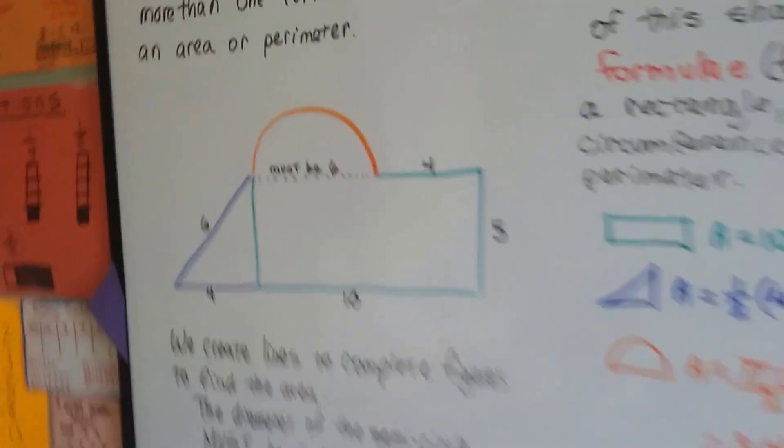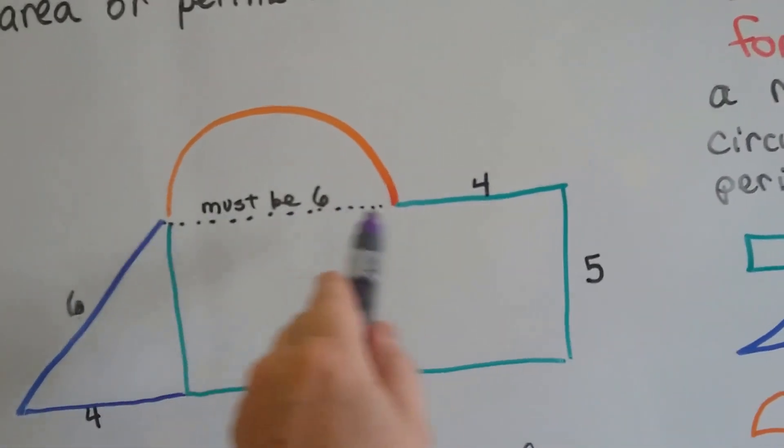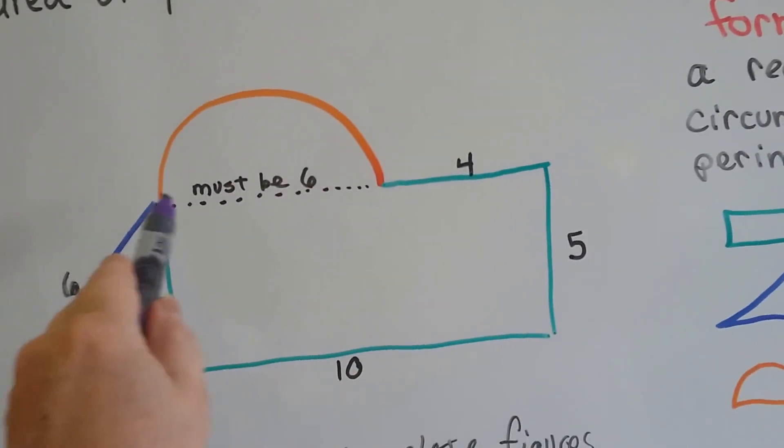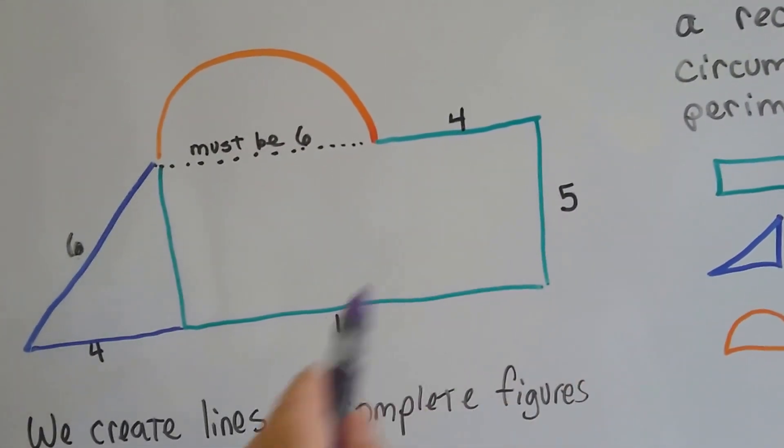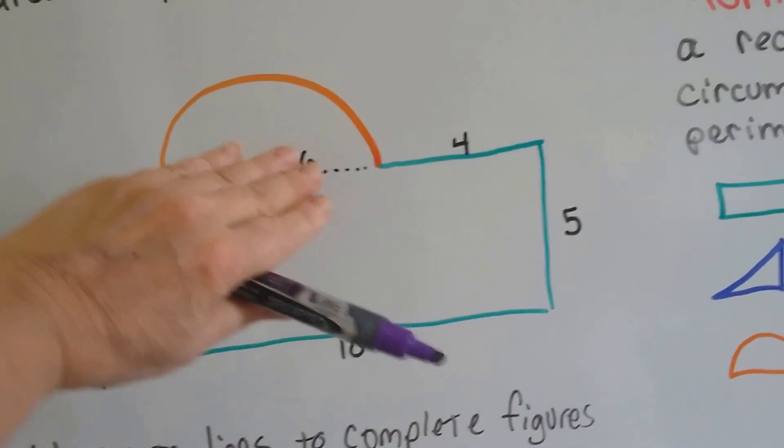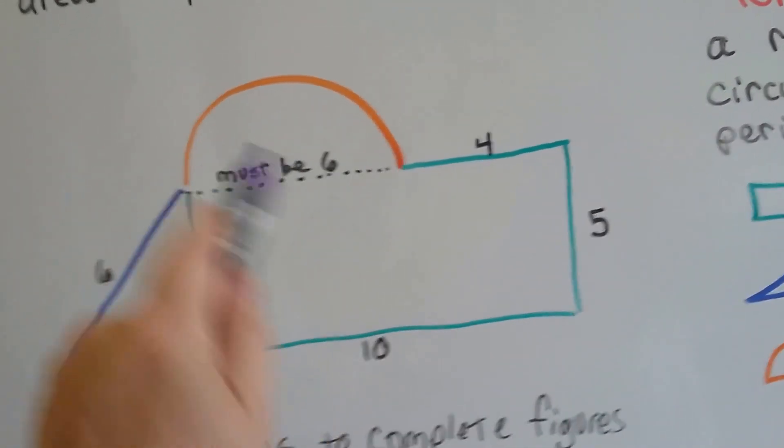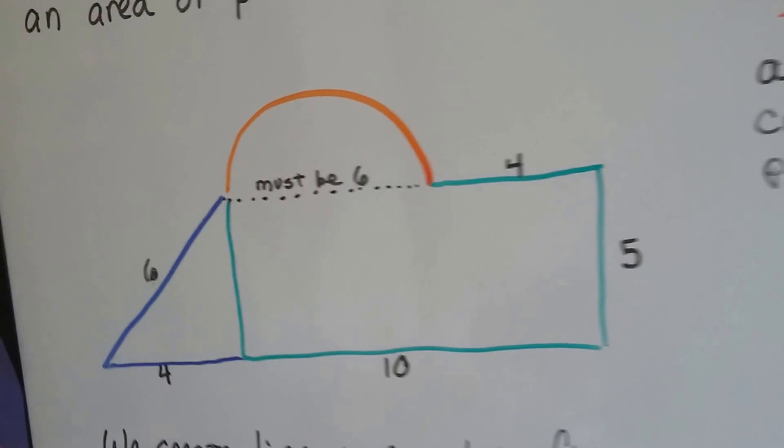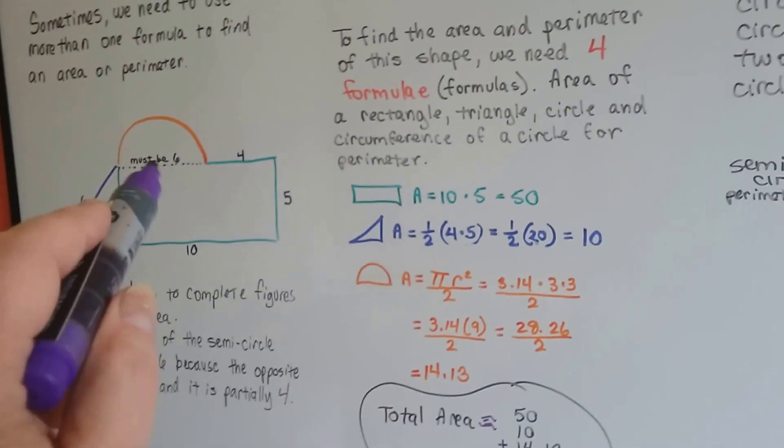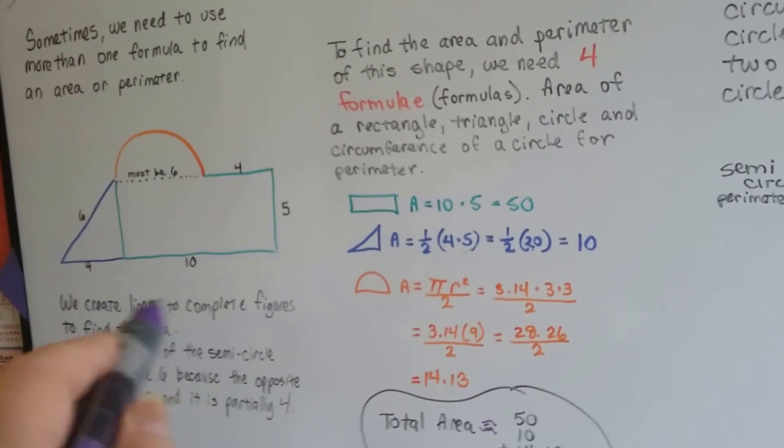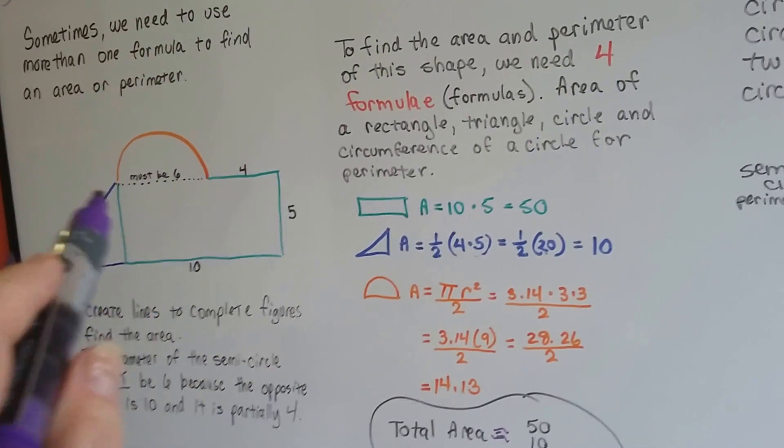Now the one thing you have to remember is because this is a dotted line, you don't count the 6 in here. We already did length times width 10 times 5 for the rectangle. So this isn't important except for concerning the half circle, to find its area and its perimeter. After that, we don't need it. So don't include this 6 into part of the perimeter because it's not. This is the outside part. Perimeter is the outside, remember?